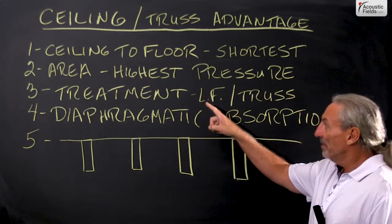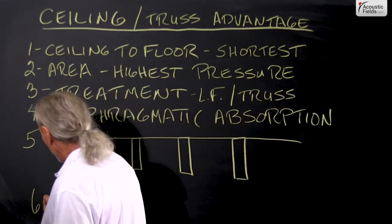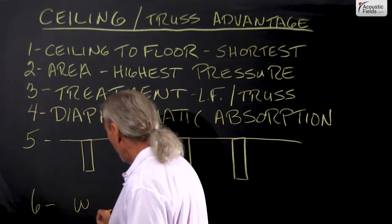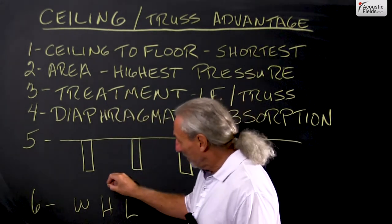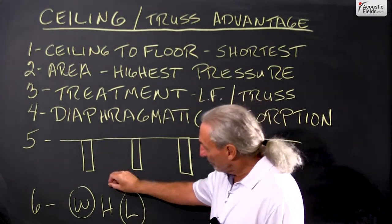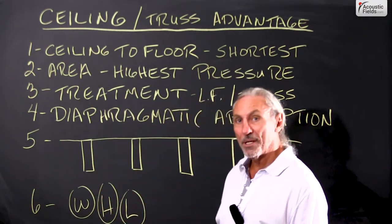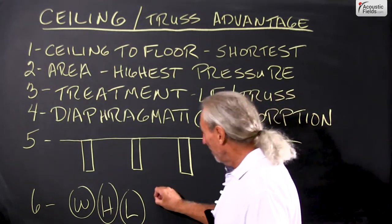So we know that usually when we do our dimensions in acoustics we have width, height, and length. We always try to get two of the three favorable and it's usually the height dimension that's the biggest problem because it's the lowest.